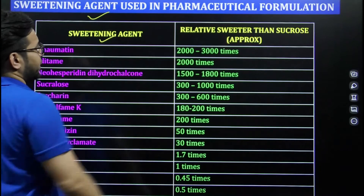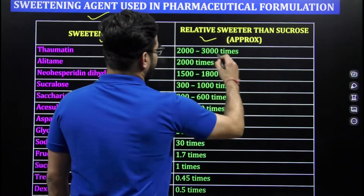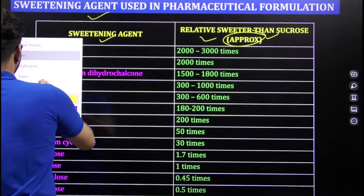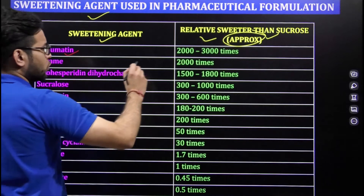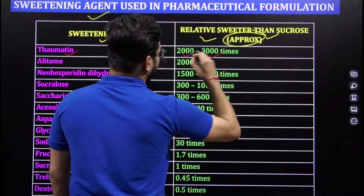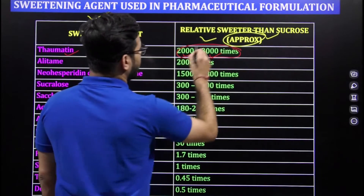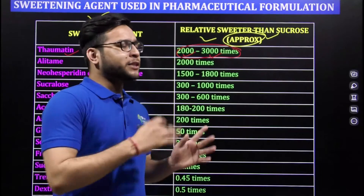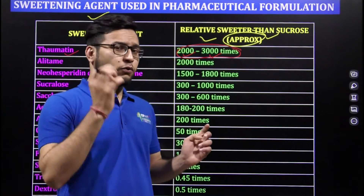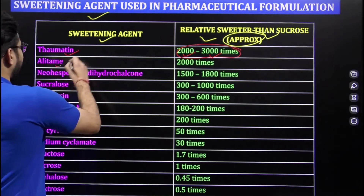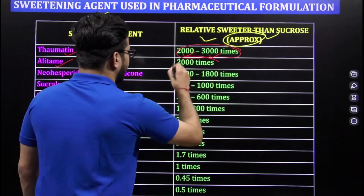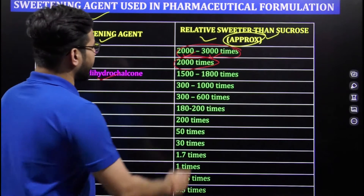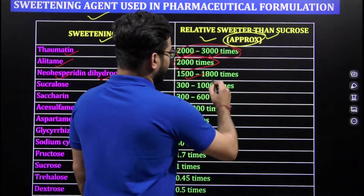If I talk about thaumatin, it is 2000 to 3000 times sweeter than sucrose — keep these values in your minds. Alitame is 2000 times sweeter. The third one is neohesperidin dihydrochalcone, which is 1500 to 1800 times sweeter than sucrose.